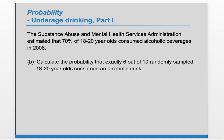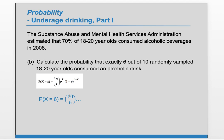Let's calculate the probability that exactly 6 out of 10 randomly sampled 18-20 year olds consumed an alcoholic drink. We can use the binomial formula, which we see here, and we have to identify n, k, and p. We already said that n is 10, k is 6, and p is given as 0.7. So we want the probability that x equals 6: that's 10 choose 6, and then p is 0.7 raised to the k of 6.